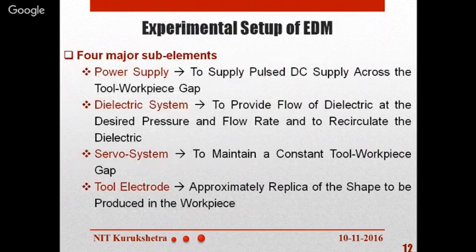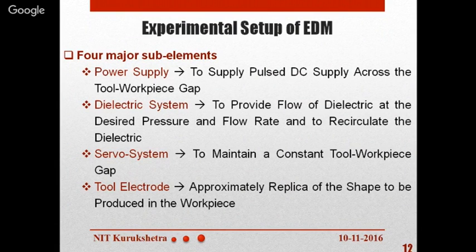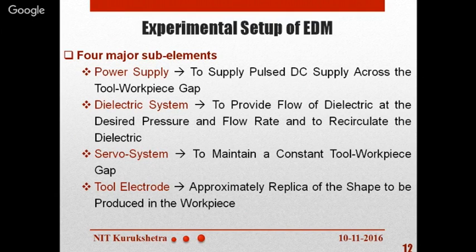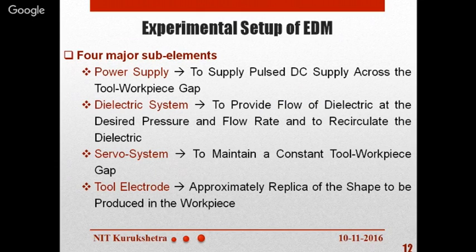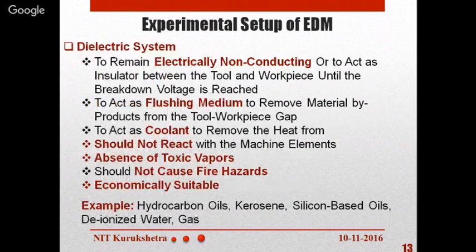The EDM experimental setup consists of four sub-elements. First, the power supply unit provides pulse DC supply across the tool-workpiece gap. Second, the dielectric system provides flow of dielectric at desired pressure and flow rate and recirculates the dielectric. Third, the servo system maintains a constant tool-workpiece gap. Fourth, the tool electrode — EDM is essentially a copy-paste process: if we wish to produce a surface, we choose the same surface profile on the tool. The tool electrode is a replica of the shape to be produced in the workpiece.